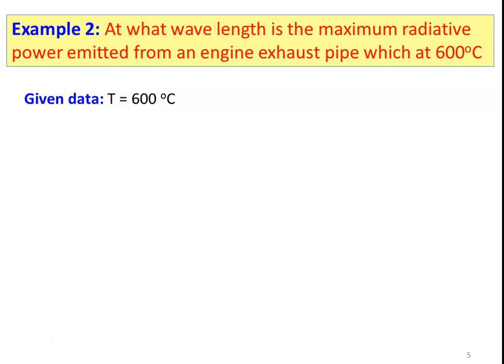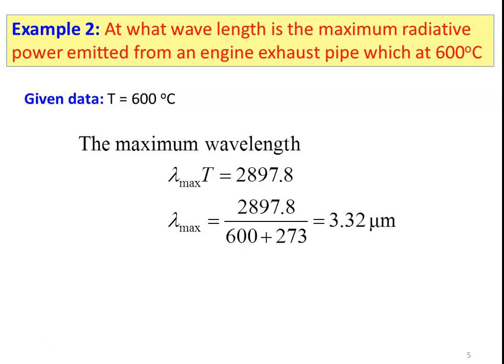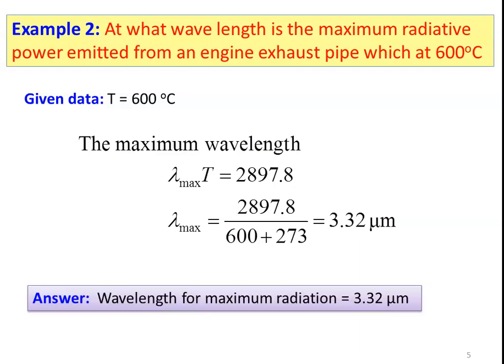Example number 2: At what wavelength is the maximum radiative power emitted from an engine exhaust pipe at 600 degrees Celsius? Using Wien's displacement law, λ_max × T = 2897.8. So λ_max = 2897.8 / (600 + 273) = 3.32 micrometer. The wavelength for maximum radiation is 3.32 micrometer.